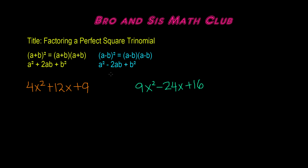A perfect square trinomial is the result of squaring a binomial. A binomial, as we all know, is a two-term polynomial. And when you square a binomial, you're multiplying the binomial by itself, and the result is going to be a perfect square trinomial.